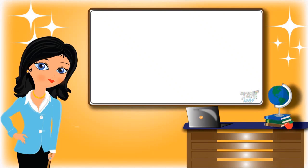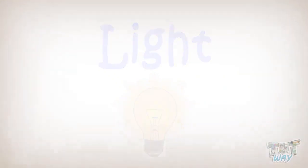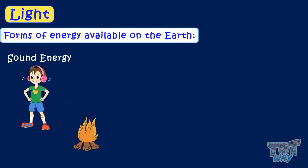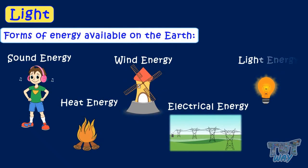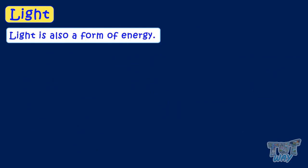Hi kids! Today we will learn about light or light energy. So let's start. We have different forms of energy available on Earth: light, sound energy, heat energy, wind energy, and electrical energy. So light is also a form of energy.